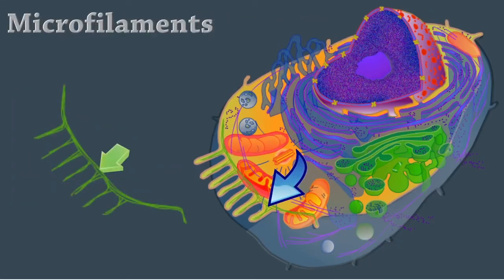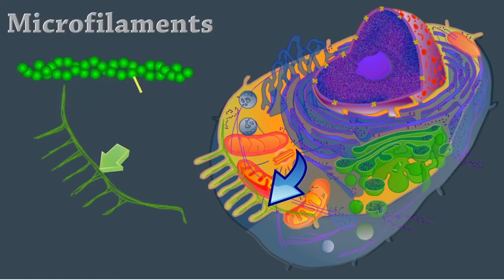Microfilaments are fine filaments of the contractile protein actin. They're involved in muscle contraction and other types of intracellular movement. They help form the cell's cytoskeleton, cilia, and, if it's present, the flagella.